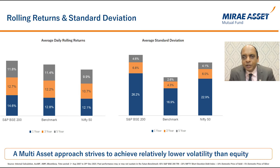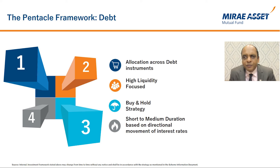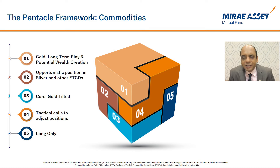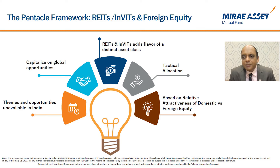To conclude, a multi-asset approach strives to achieve relatively lower volatility than equity. The debt portion will mainly follow a buy-and-hold strategy with investments across corporate debt, G-Secs, SDLs, and money market instruments. The debt portfolio will maintain a short to medium duration — currently around two-and-a-half to three-and-a-half years. Gold is considered a safe haven and hedge against inflation; the core commodity investment will be in gold with tactical allocation to silver and other ETCDs based on fundamental factors or momentum. The scheme also has provision to invest in REITs and InvITs, adding flavor of a distinct asset class, and can invest in foreign equities to capitalize on themes not available in India.